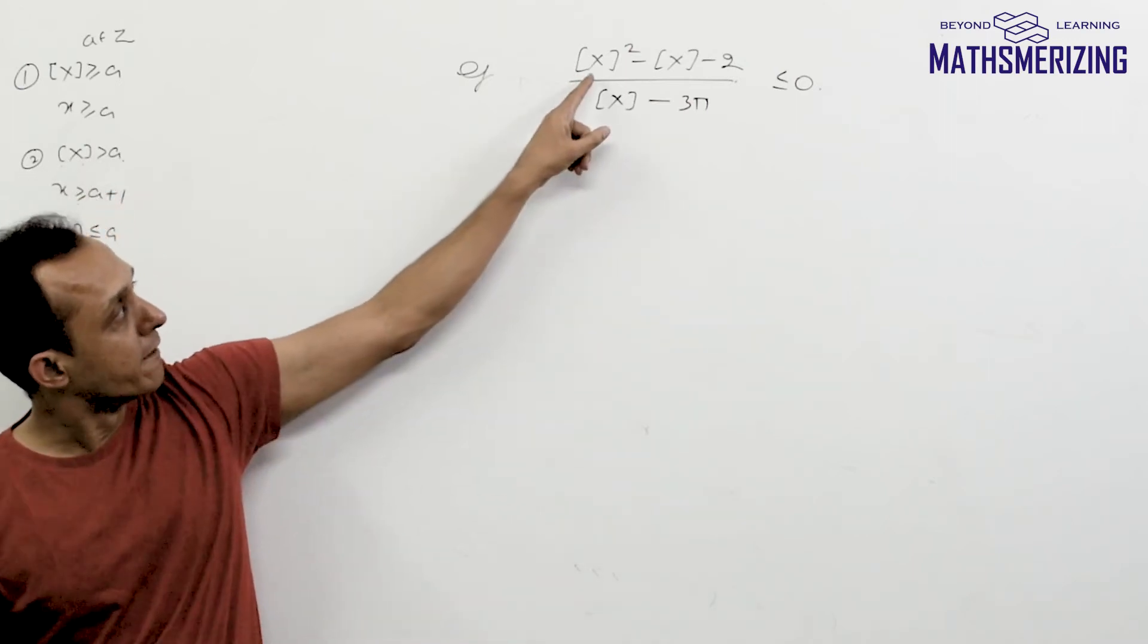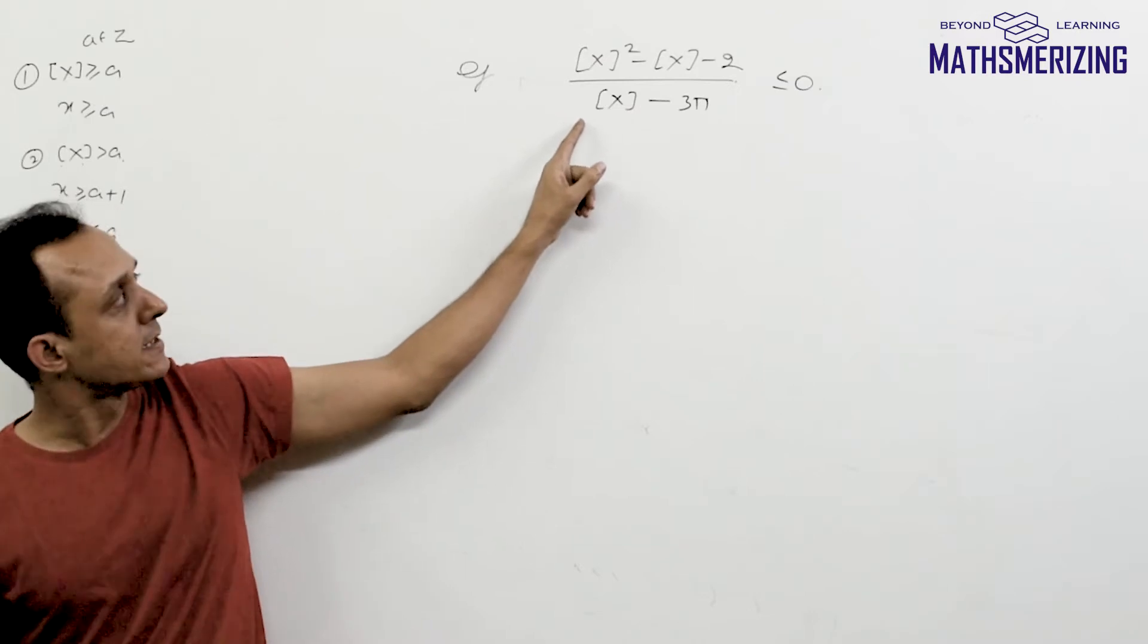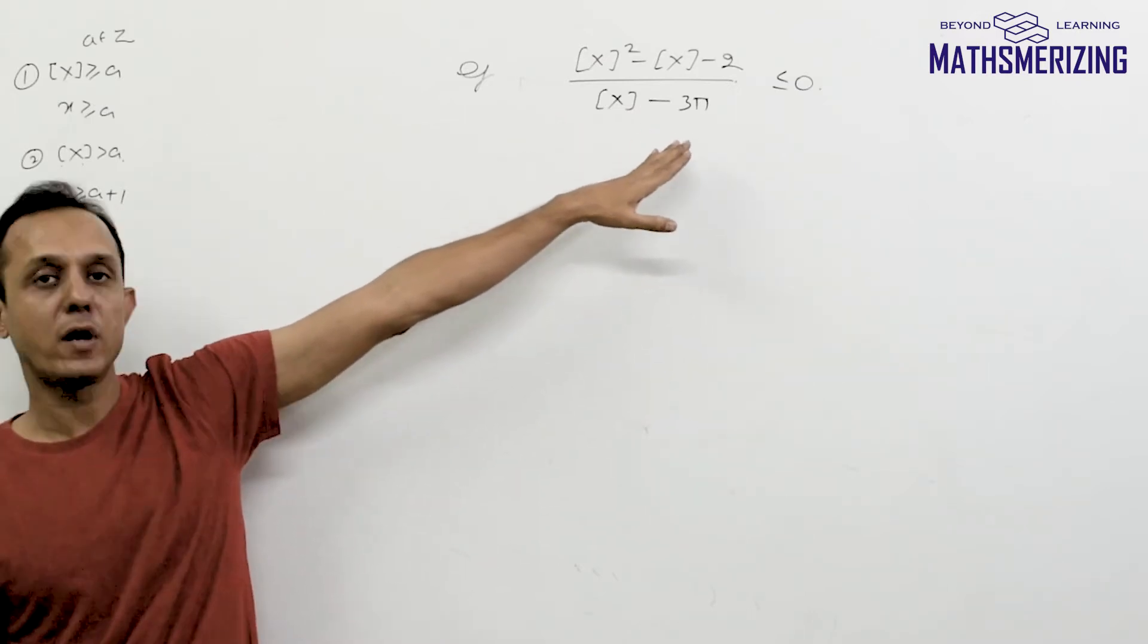Now let us take another question which is greatest integer function of x squared minus greatest integer function of x minus 2 upon greatest integer function of x minus 3π is less than or equal to 0.